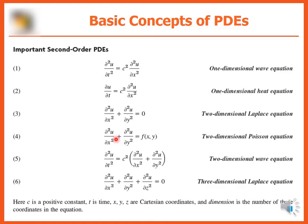These are some of the important second-order PDEs. In these equations, c is a positive constant, t is time, x, y, z are Cartesian coordinates, and dimension is the number of these coordinates in the equation.